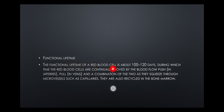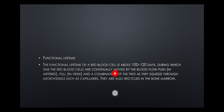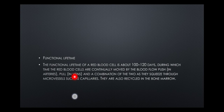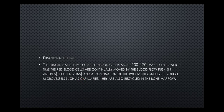The functional lifetime of a red blood cell is about 100 to 120 days, during which time the red blood cells are continuously moved by blood flow — pushed in arteries, pulled in veins, and a combination of both as they squeeze through microvessels such as capillaries. They are also recycled in the bone marrow.